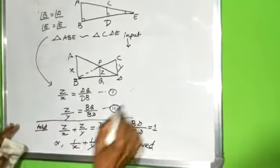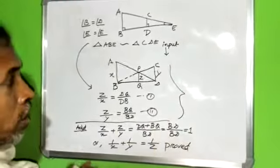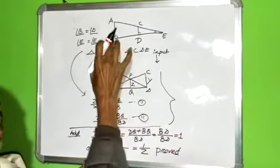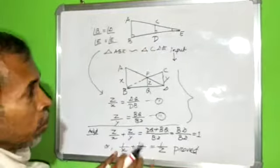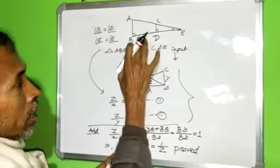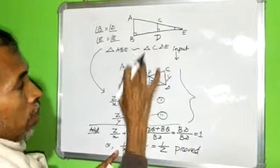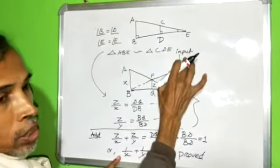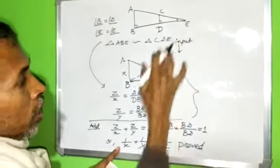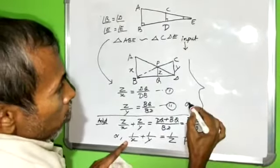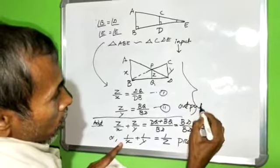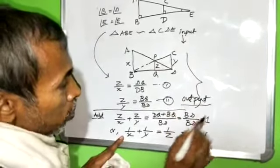This is the main question. To prove this, above theorem is useful. That is why, in place of above theorem, input is written. With this input, this is our output. With this input, this is our output.